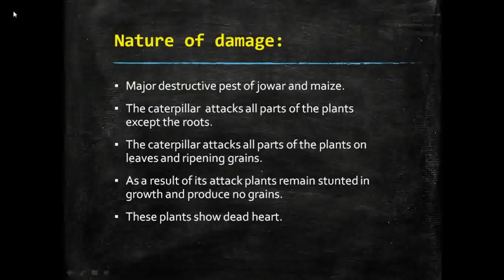Now let's look at the nature of damage of this pest. It is the most destructive pest of jawar and maize. The damaging stage is the caterpillar, which attacks all parts of the plant except the roots — including leaves and ripening grains. As a result of its attack, the plant remains stunted in growth and produces no grains.